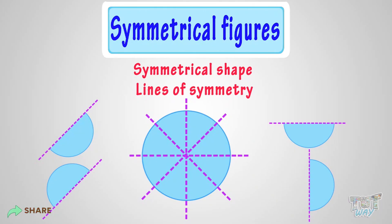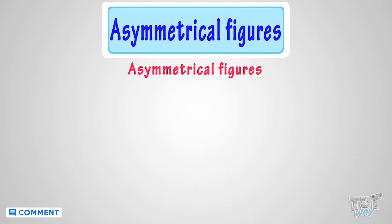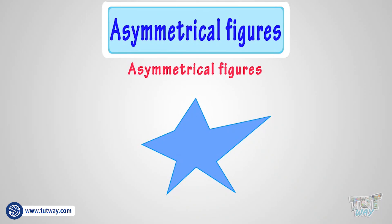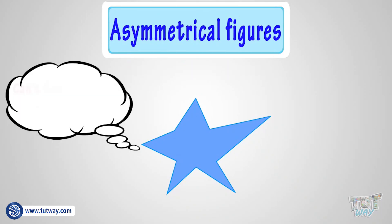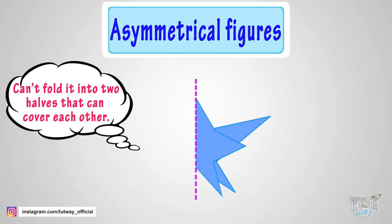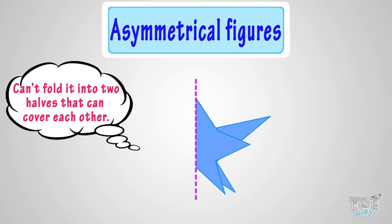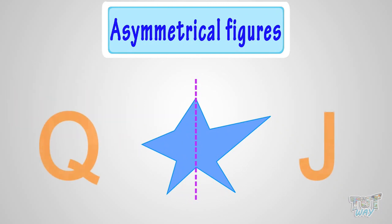Kids, now let's see some asymmetrical figures. This is an asymmetrical figure, as we can't fold it into two halves that can cover each other. Here are some more examples. These figures are asymmetrical. These numbers and characters are perfect examples of asymmetrical figures.